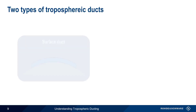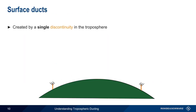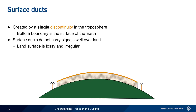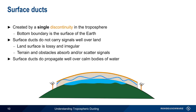Depending on how they're formed, ducts can be classified as either surface ducts or elevated ducts. Surface ducts are created by a single discontinuity in the troposphere's refractive index. This discontinuity forms the top boundary of the duct, and the Earth's surface forms the lower boundary. Generally speaking, surface ducts do not carry signals very well over land, as the land surface is lossy and irregular, and both natural and man-made obstacles will scatter and absorb signals. Surface ducts do, however, propagate signals well over large, calm bodies of water, and these types of surface ducts are often responsible for very long-distance tropospheric propagation.